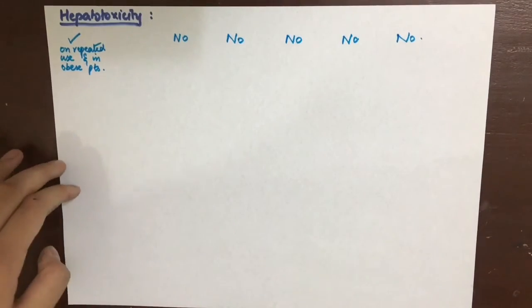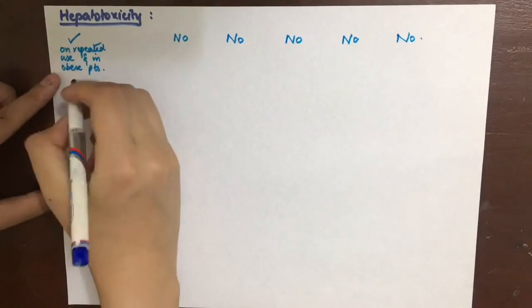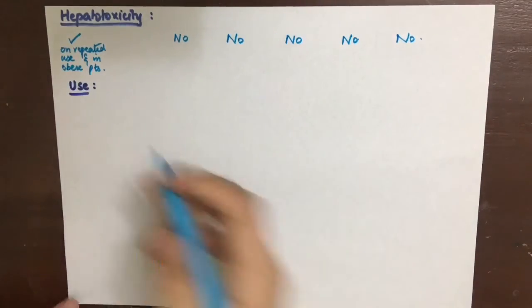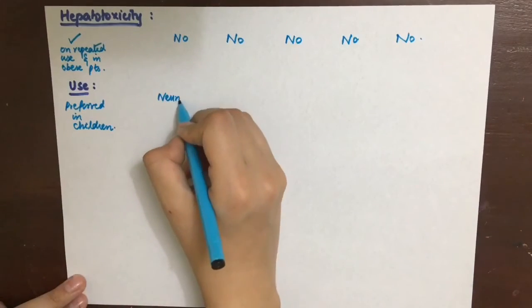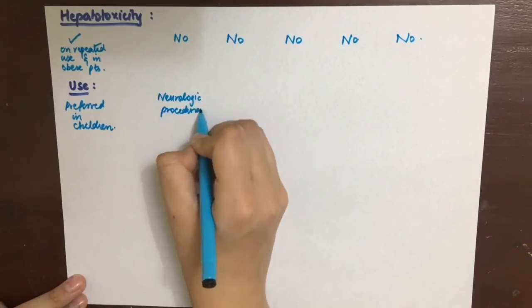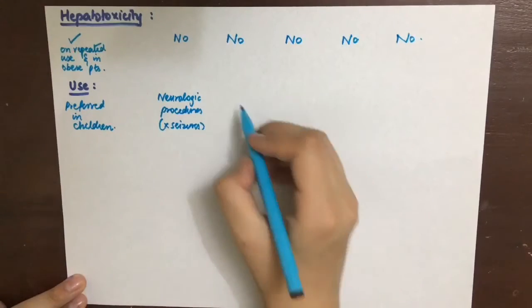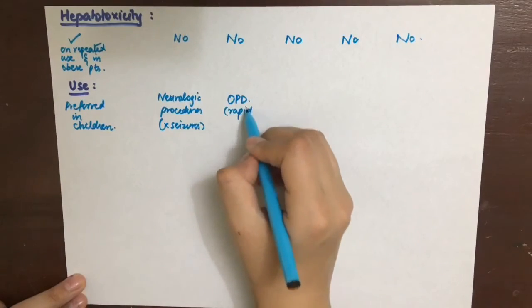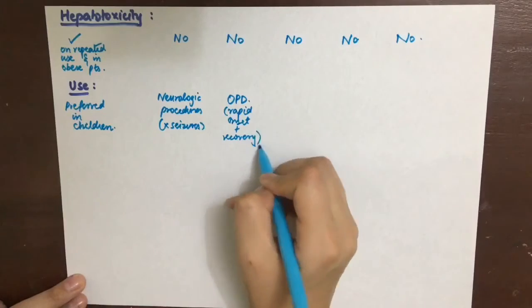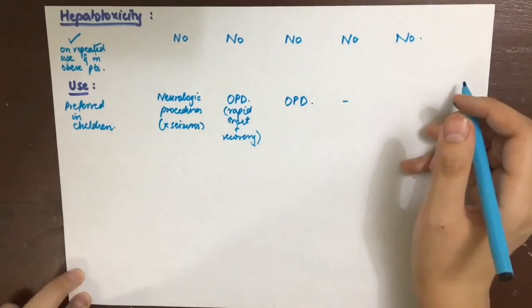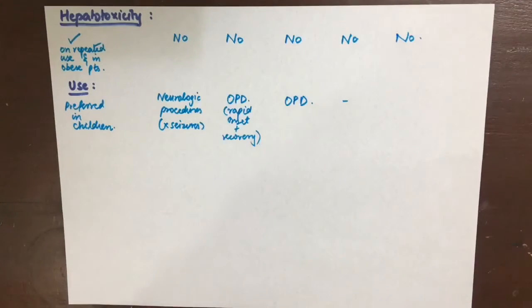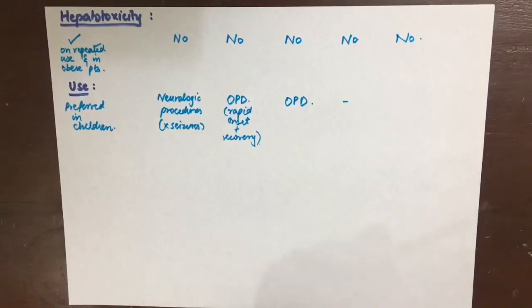Lastly, let's see what they are preferred for and what are the uses. Halothane is preferred for children. Isoflurane is preferred for neurologic procedures because it does not cause seizures. Desflurane is used in OPD because of rapid onset and recovery. And so is sevoflurane. Ether is obsolete now.